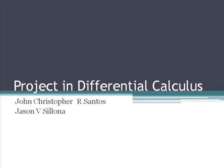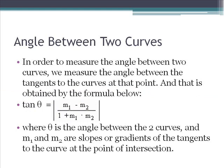This is a project in differential calculus. Our topic is the angle between two curves. In order to measure the angle between two curves, we measure the angle between the tangents to the curves at that point. That is obtained by the formula: tangent theta equals M sub 1 minus M sub 2, all over 1 plus M sub 1 times M sub 2, where theta is the angle between the two curves, and M sub 1 and M sub 2 are the slopes or gradients of the tangent to the curves at their point of intersection.